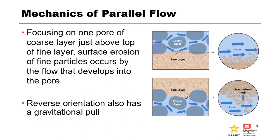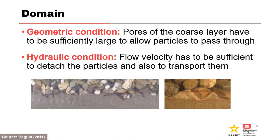Focusing on one pore of the coarse layer just above the top of the fine layer, surface erosion of fine particles occurs by the parallel flow which develops into the pore. The reverse orientation also has a gravitational pull. The domain for soil contact erosion is defined by a geometric condition in which pores of the coarse layer have to be sufficiently large to allow particles to pass through, and a hydraulic condition in which the flow velocity has to be sufficient to detach the particles and also to transport them. Continuous erosion modifies the interface geometry and gradation.